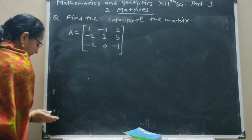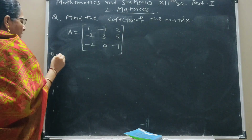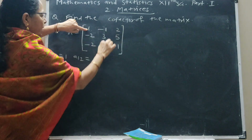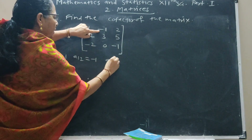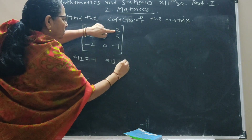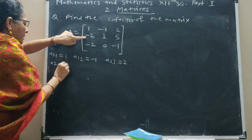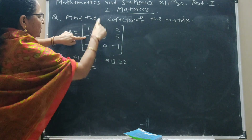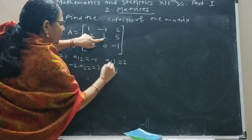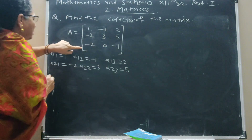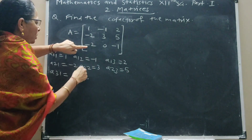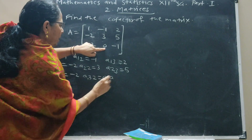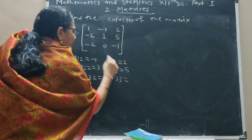Now, here the elements are: A11 (first row, first column) = 1; A12 (first row, second column) = minus 1; A13 (first row, third column) = 2. A21 (second row, first column) = minus 2; A22 (second row, second column) = 3; A23 (second row, third column) = 5. A31 (third row, first column) = minus 2; A32 (third row, second column) = 0; A33 (third row, third column) = minus 1.